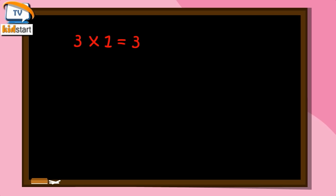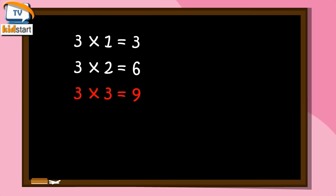Three Ones are Three. Three Twos are Six. Three Threes are Nine. Three Fours are Twelve.